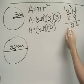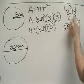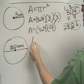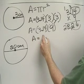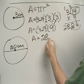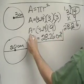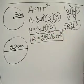9 times 3 is 27, plus 1 is 28. Since there's two decimal places, we're going to move it over two places. So in this case, the area is 28.26 centimeters squared.